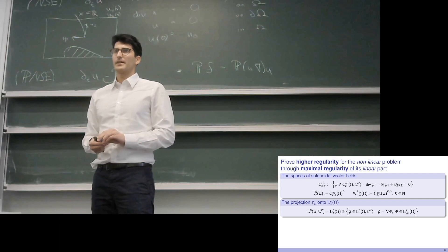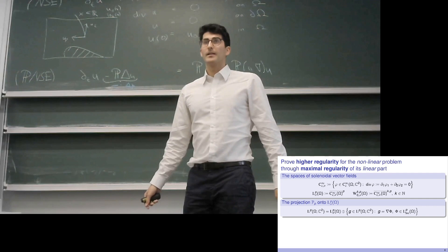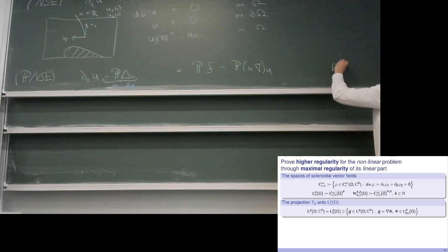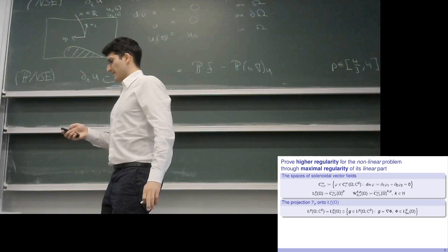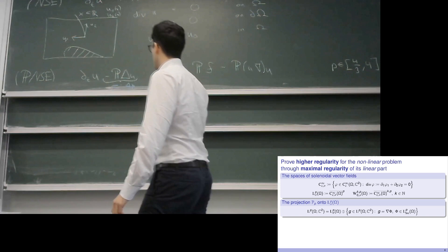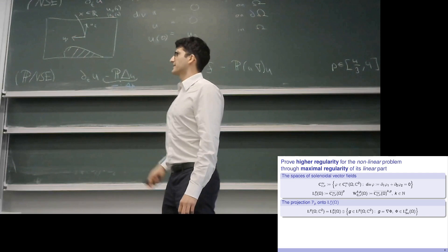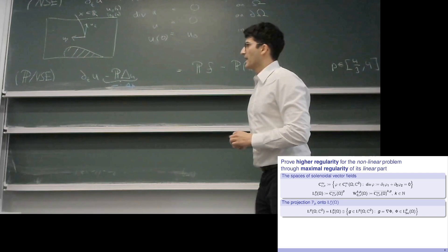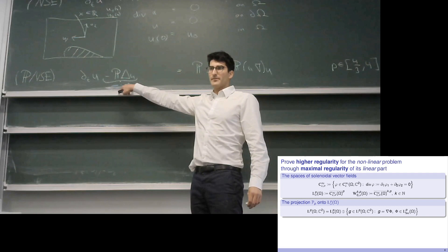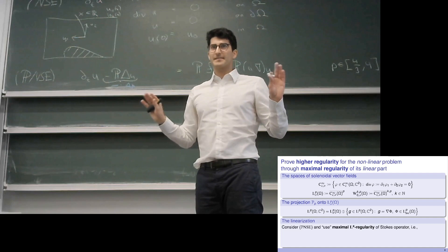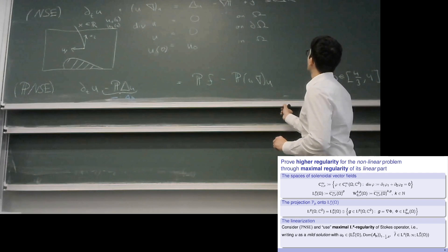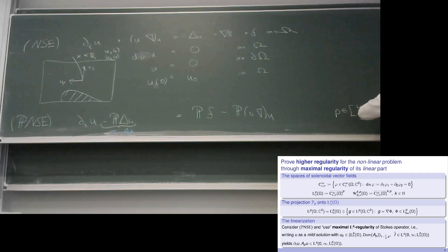The range of p goes at least from 4/3 to 4 — an interval around two — but it's not as easy as in the smooth domain case, so there are limitations. We have performed a formal calculation yielding a linear operator, and the idea is to use or to show that this operator has maximal Ls regularity for some s still to be specified.